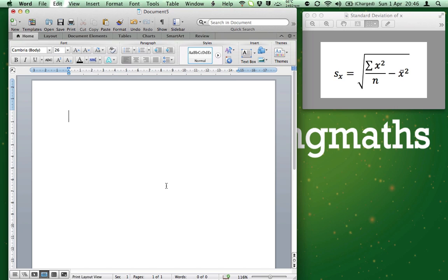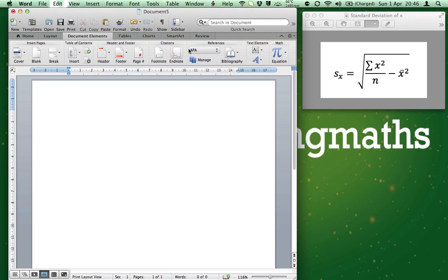So depending on the operating system you are using, the layout of Word changes slightly. To find the Equation Editor, on the Mac you go to Document Elements and then move along to the right until you find Equation.